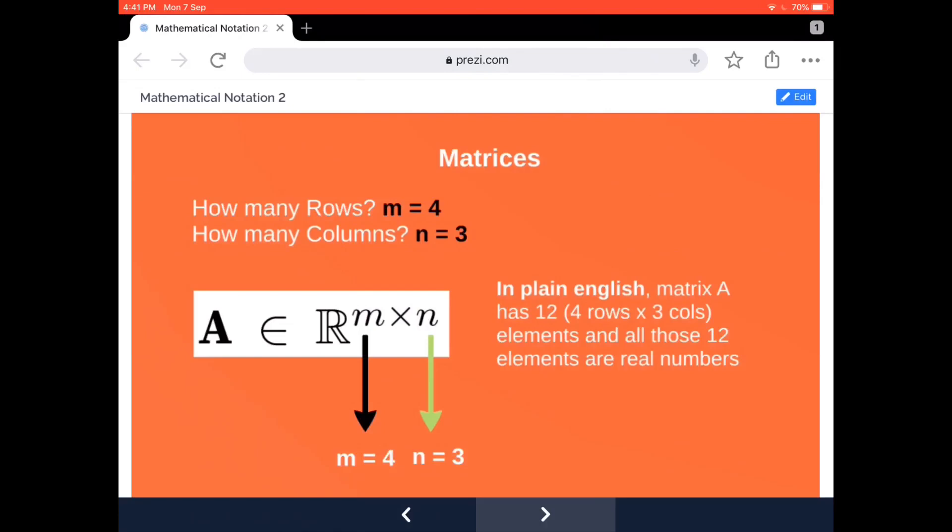It is represented mathematically like A ∈ ℝᵐˣⁿ. This m × n, again in context to matrix, will also be called dimension. So ℝᵐˣⁿ—as simple or straightforward as it could be—just means a matrix has certain elements and all the values of those elements are real numbers. That is how you're going to represent it.